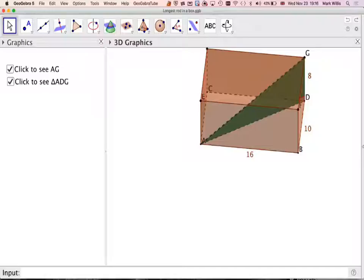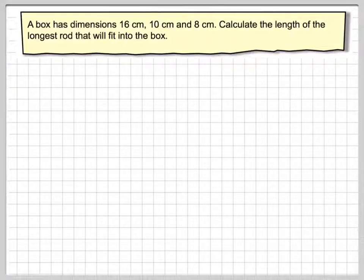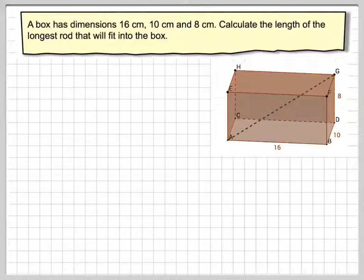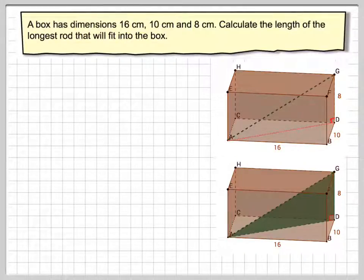And basically, it's a two-step Pythagoras theorem question. So going back to this, there's a screenshot. So we need to use this triangle here. So that's right-angled.